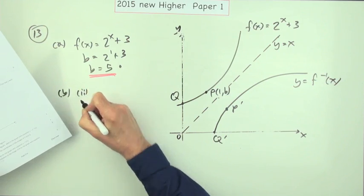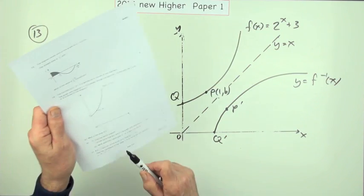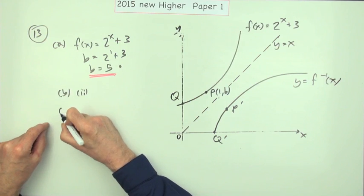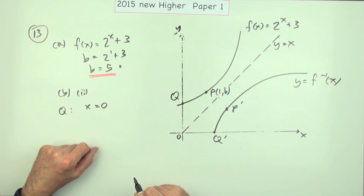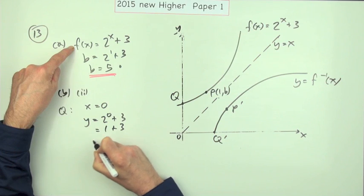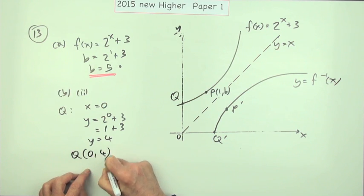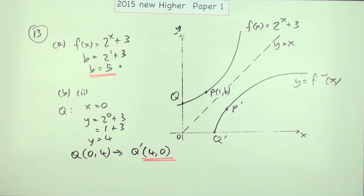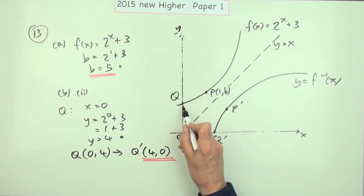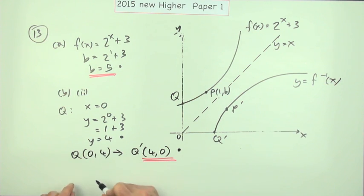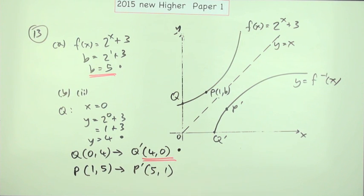Part (b)(ii) says: write down the coordinates of those images. You'd need to know what point Q is. When x equals 0 on the original graph, y equals 2 to the power 0 plus 3, which is 1 plus 3, so y equals 4. Therefore Q is the point (0, 4), which means Q' is (4, 0) — interchange the coordinates. For P, we already know P is (1, 5), so its image P' is (5, 1). There are two marks: one for finding the y-intercept of 4, and one for flipping the coordinates.